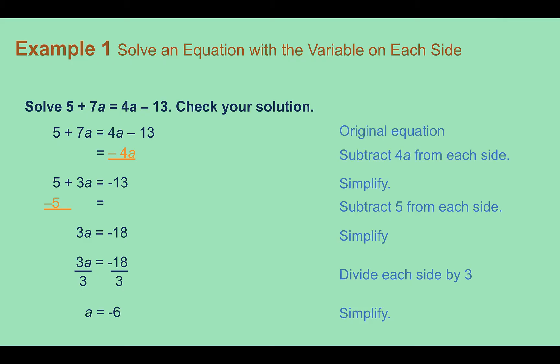Example 1: solve an equation with the variable on each side. Solve 5 plus 7a equals 4a minus 13, and check your solution. Here we can see the variable shows up on both sides. In order to move it to one side so we can solve for that variable, we're going to use our subtraction or addition properties, just like we did with other solving equations, to make it so there's only one variable.